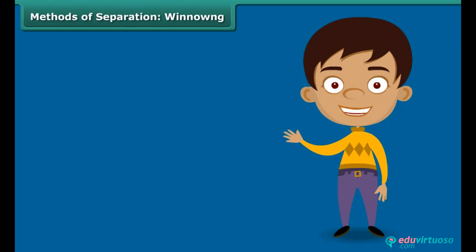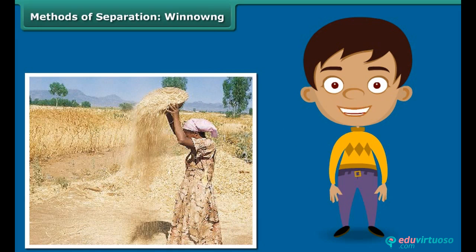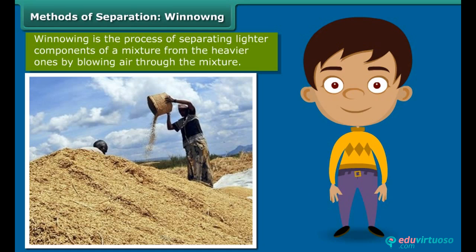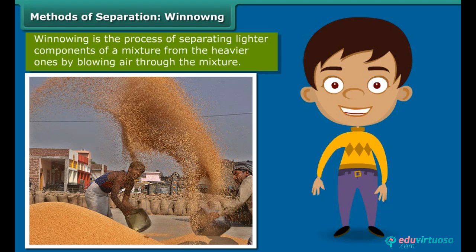During your train trips through the countryside, you would have noticed women standing at a height, shaking a basket held over their heads continuously. They are separating the grain from the husk by simply allowing the wind to blow away the husk and other lighter impurities. The heavier grain falls down on the ground in a heap. This process of separating impurities from the grain by allowing a current of air to blow away the lighter impurities is known as winnowing.